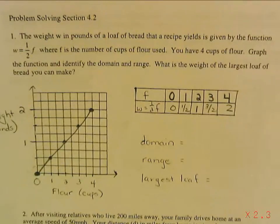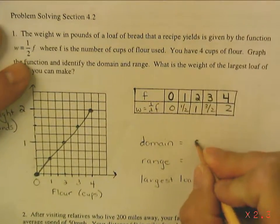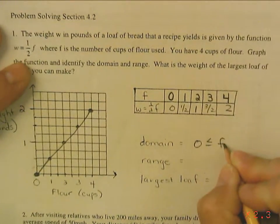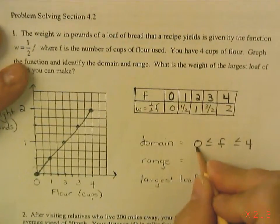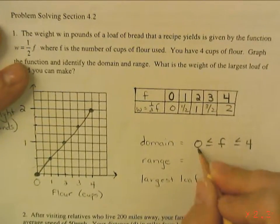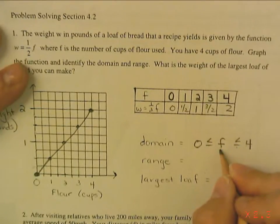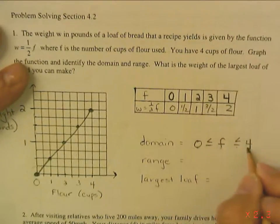Okay, so my domain, in this case, is a compound inequality. The amount of flour is in between zero and four. It's greater than zero, greater than or equal to zero, but less than or equal to four.